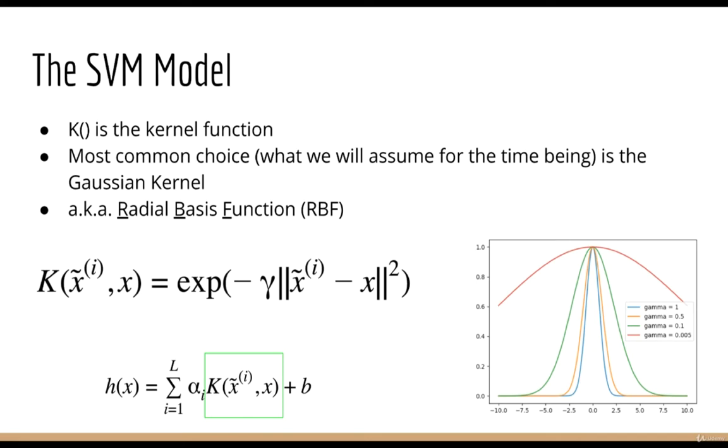First, the function k is what we call a kernel function. And our choice for this kernel function, for the time being, will be the Gaussian kernel, also known as the radial basis function. As you can see, the acronym for radial basis function is RBF, which explains the title of this lecture, RBF networks. We'll explain this function in more detail later on, but for now, just know that this is the equation. It basically looks like a Gaussian, with no constant term.